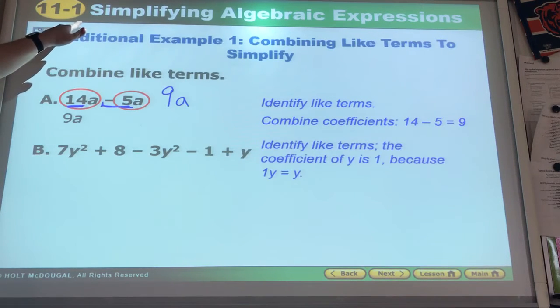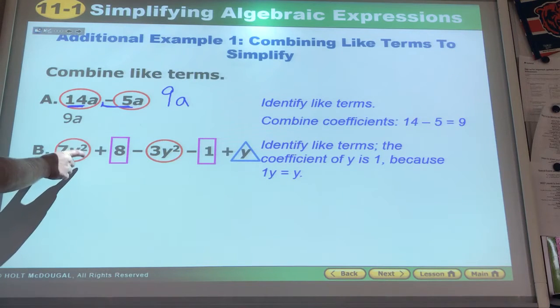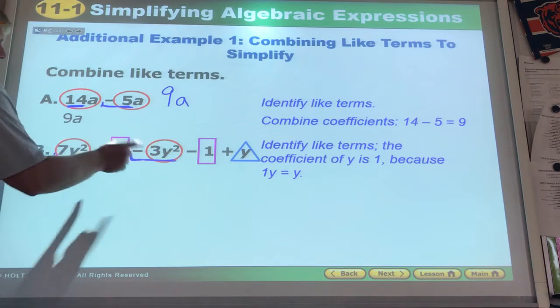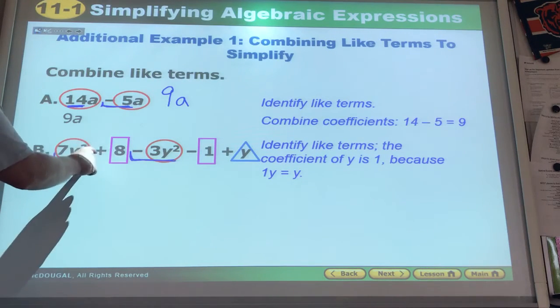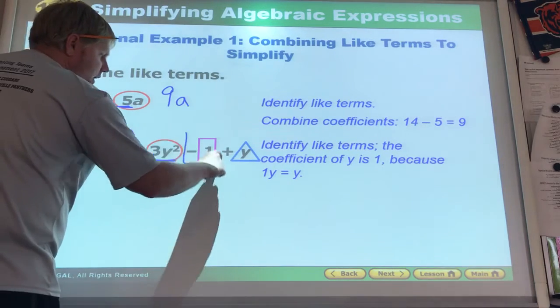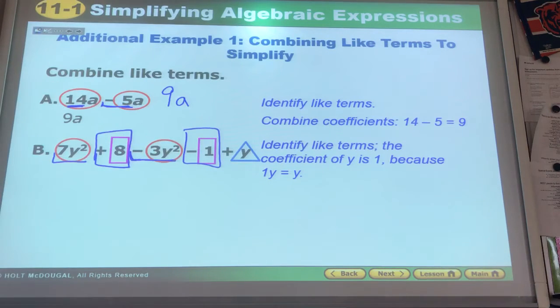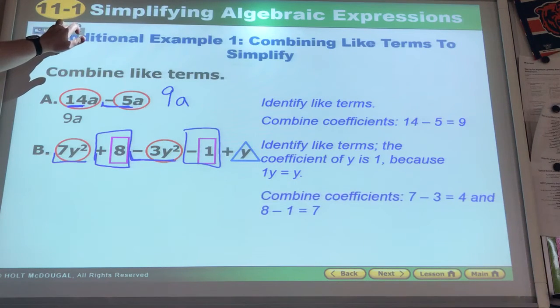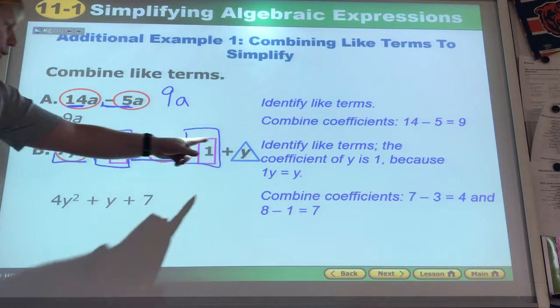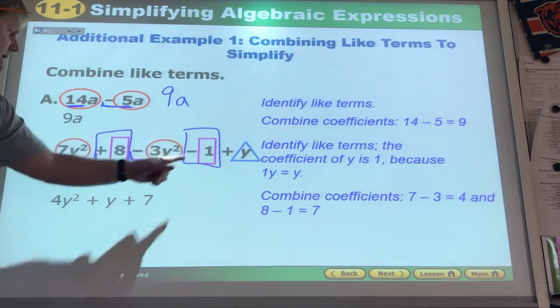Here in this one, identify the like terms. Positive 7, negative 3, so that would be 4. Positive 8, negative 1, so that would be 7. We add those like terms. Those two go together and get the 4y squared plus the y plus 7.